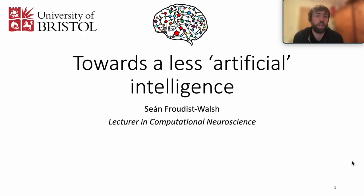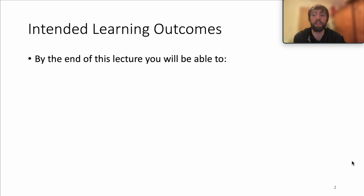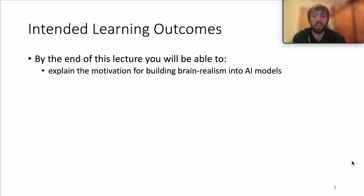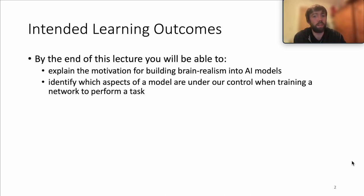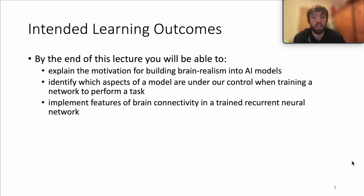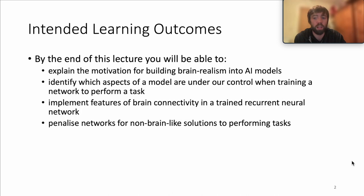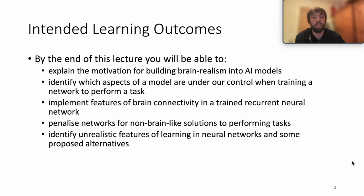How can we move towards a less artificial intelligence and create models that are realistic and also capable of performant cognitive functions? By the end of this lecture, you'll be able to explain the motivation for building brain realism into AI-type models, identify which aspects of a model are under our control when training a network, implement features of brain connectivity in a trained recurrent neural network, penalise networks for non-brain-like solutions, identify unrealistic features of learning in neural networks, and learn about some proposed alternatives.